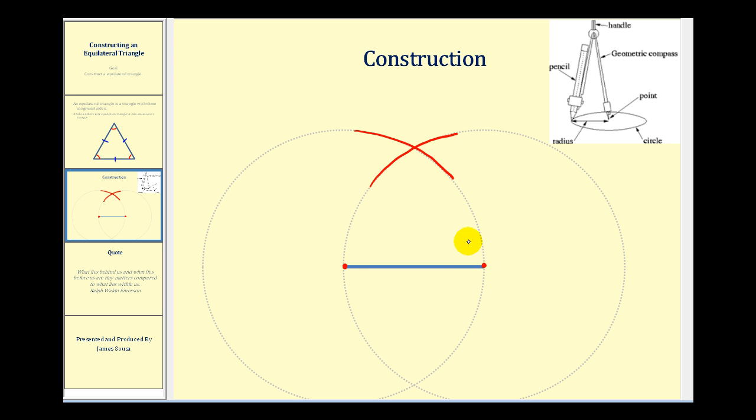And now we need to make two segments. One from this end point to the intersection of the arcs, and another segment from this end point to the intersection of the arcs. Those will be the other two sides of our equilateral triangle.